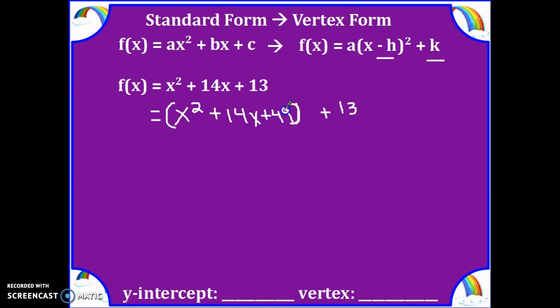Now we cannot just throw in the value 49 into our equation - it has changed the original equation. So if we add a 49 and subtract a 49 all on the same side, we really have only added the value 0, thus keeping the same equation as we started with.